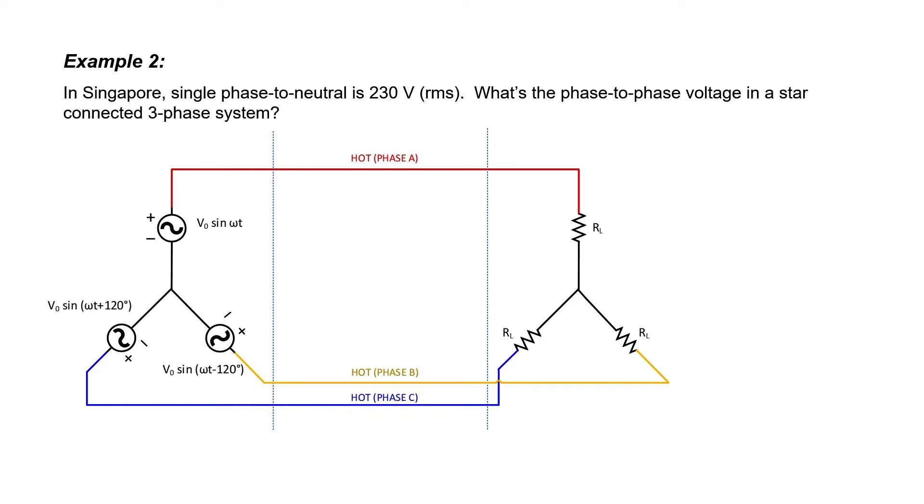Let's now take a look at an example from Singapore, which is also common to most of continental Europe and the UK. In Singapore, single phase to neutral is 230 volts RMS. Let's find the phase to phase voltage in a star connected three phase system here. Let's go ahead and draw in our neutral point and label our phase voltages. When I work the problem this time, let's keep the other voltages in terms of the voltage on phase A.